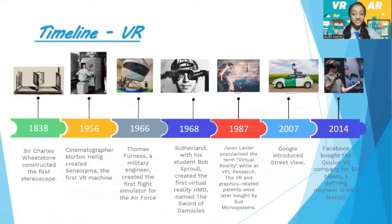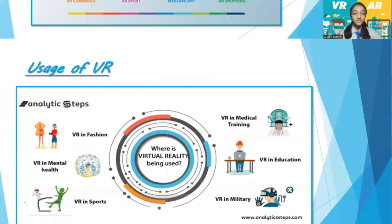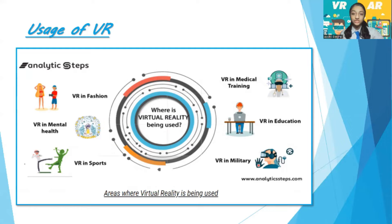Key dates in VR history: in 1838, Sir Charles Wheatstone constructed the first stereoscope. In 1987, Jaron Lanier popularized the term 'virtual reality' at VPL Research. In 2014, Facebook bought the Oculus VR company for over 2 billion dollars — a defining moment in virtual reality history. Today, AR is used in Google Street View, commerce, shopping, sports, and games. VR is also entering our lives through virtual reality fashion shows, medical training, and military exercises.